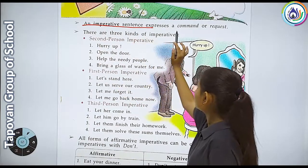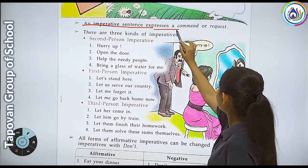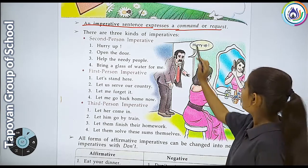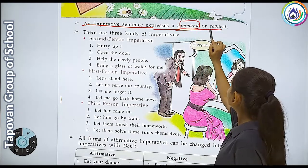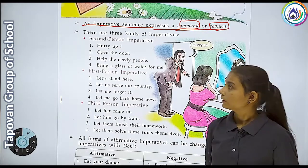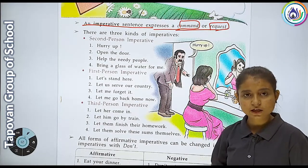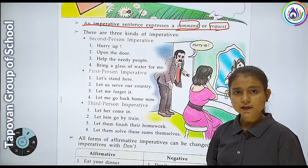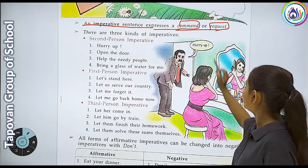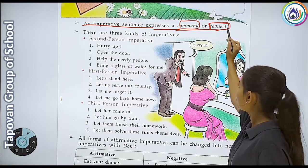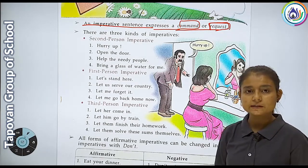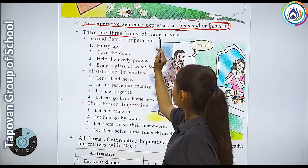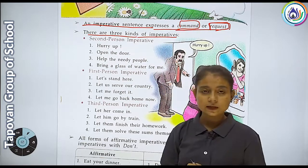An imperative sentence expresses a command or request. Imperative sentence kya express kar raha hai - command or request. Command ka matlab hai hum kisi ko aadesh dena, command dena, jaise ki 'stand up' ya 'sit down' - ye command hai. Request ka matlab hai hum kisi ko request karte hain - 'please ye kar do'. And there are three kinds of imperative.